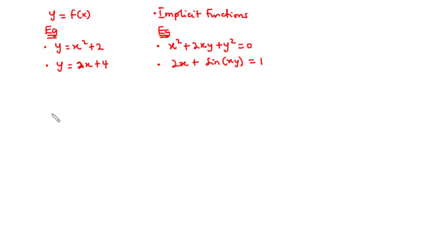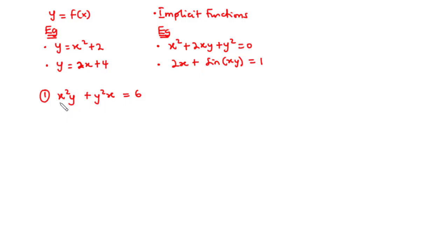Let's start off with this example. We are given the function x squared y plus y squared x equals 6. How do we differentiate this implicit function? We have two terms here: x squared y and y squared x. These are products of two variables — x squared times y, and y squared times x. To find the derivative of this function, we are going to differentiate term by term, and because they are products of two variables, we are going to use the product rule.